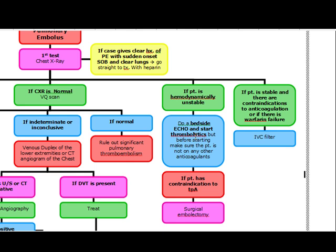Before you start the thrombolytics, you have to make sure they're not on any other type of anticoagulants and that there are no contraindications to these thrombolytics. If the patient has a contraindication to TPA, you're going to do a surgical embolectomy. That's if the patient is hemodynamically unstable. If the patient is hemodynamically stable and there are contraindications to anticoagulation or warfarin failure, you're going to put in an IVC filter, also known as a Greenfield filter.